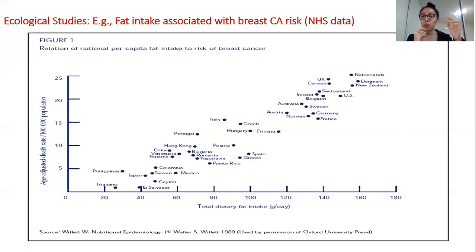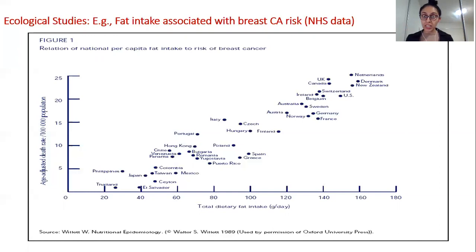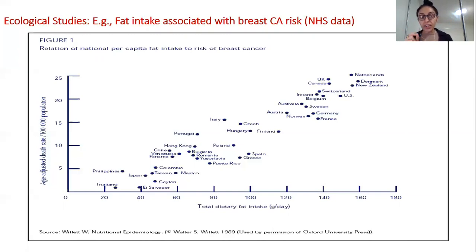In ecological study design, you take national data sets — here you have many countries — and try to find correlation and patterns between variables. Importantly, I'm using the term 'correlation,' not 'fat intake is causing death.' You cannot associate causation only with ecological study designs. Where you can associate causation is something I'll explain in the coming slides.